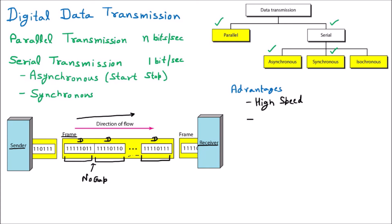There is no gap in synchronous transmission, meaning you don't have to wait — just like typing on a keyboard continuously without pausing. Additionally, there are no start and stop bits as in asynchronous transmission, which means no extra bits and therefore no overhead. So the advantages are: high speed, no gap, and no extra bits.